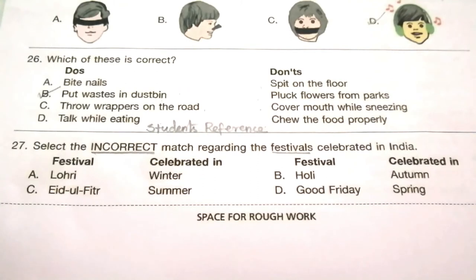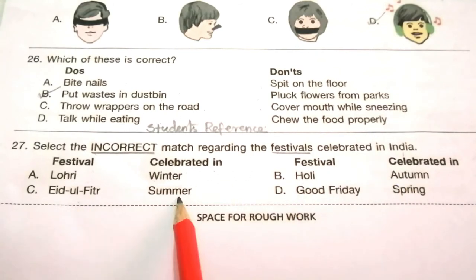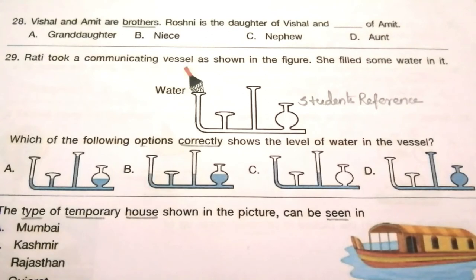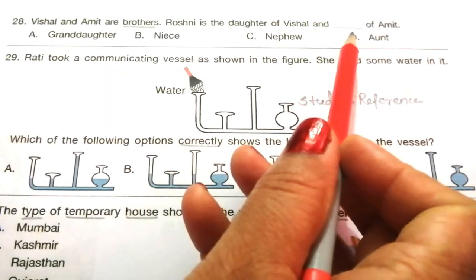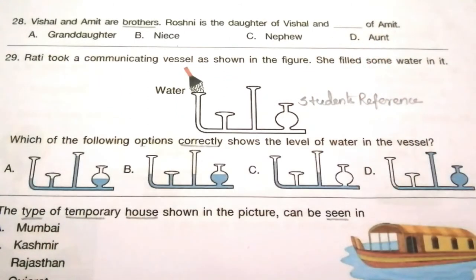Question 27: Select the incorrect match regarding festivals celebrated in India. Lohri in winter, Holi in autumn, Eid in summer, Good Friday in spring. The incorrect one is Holi in autumn - Holi is celebrated in spring season. Question 28: Vishal and Amit are brothers, Roshni is the daughter of Vishal and blank of Amit. Granddaughter, niece, nephew, or aunt. The answer is B, niece.